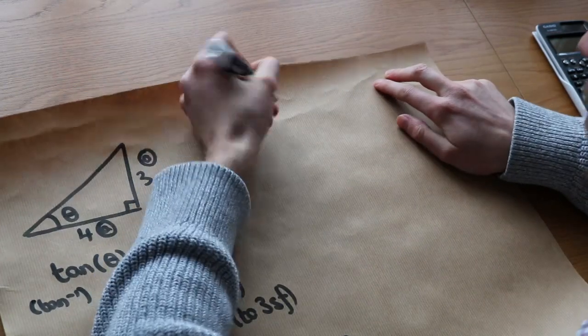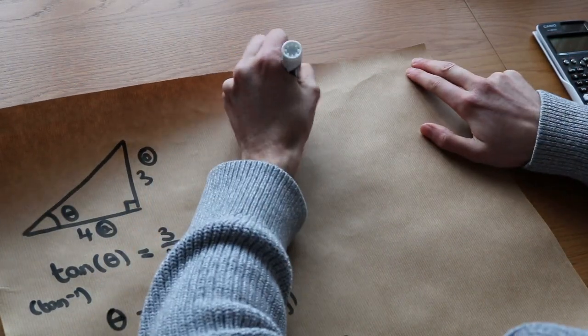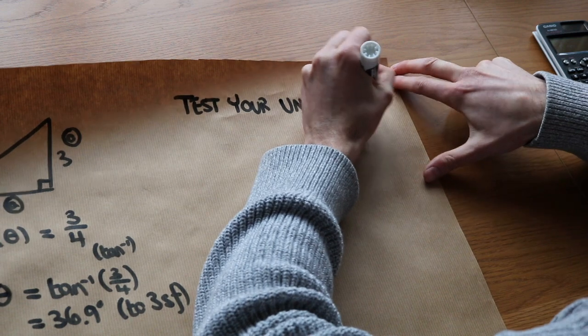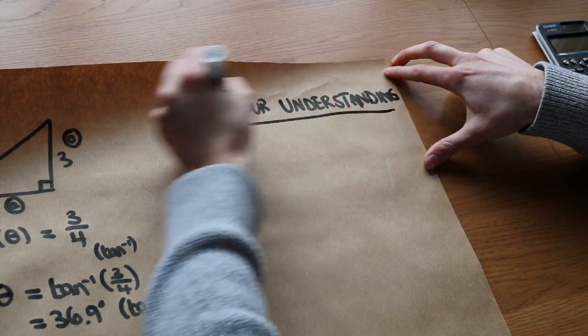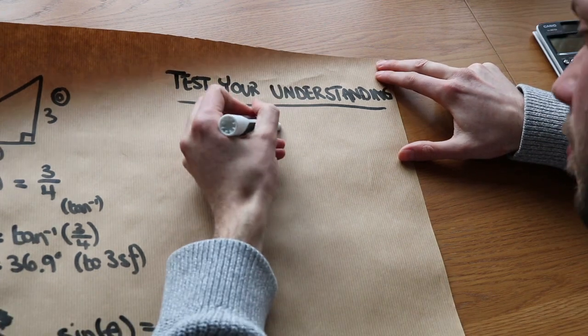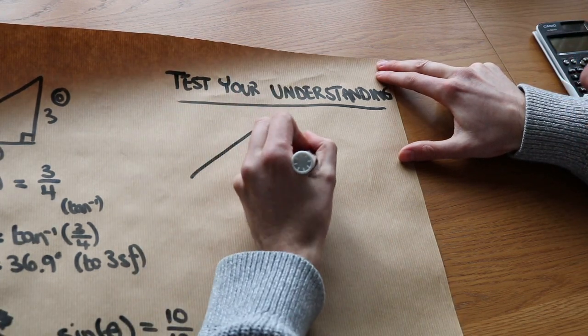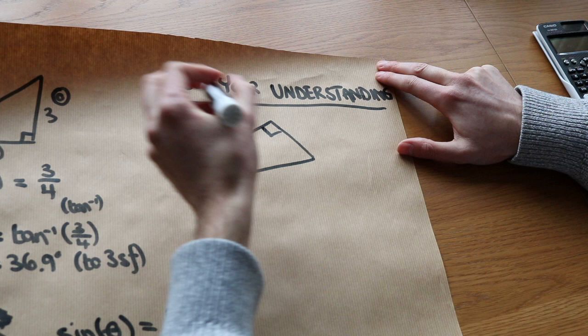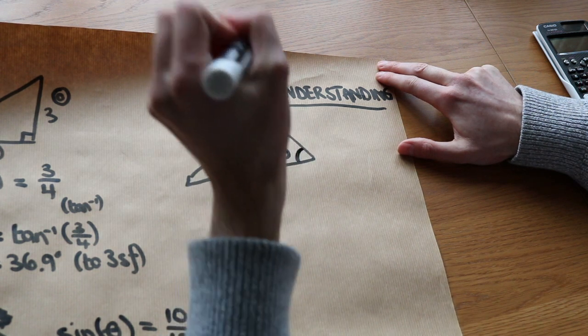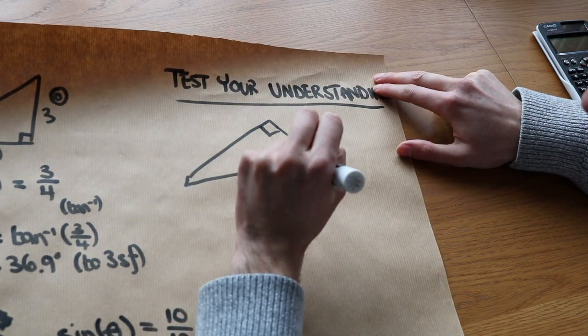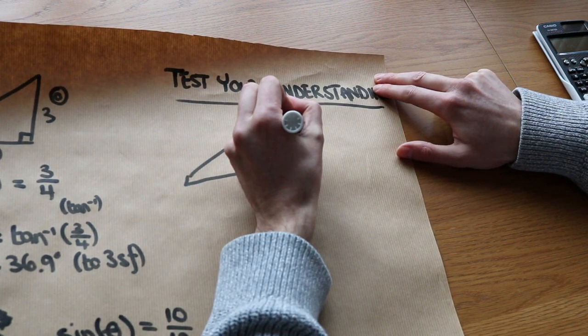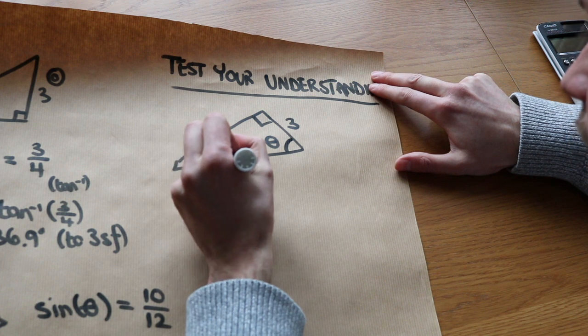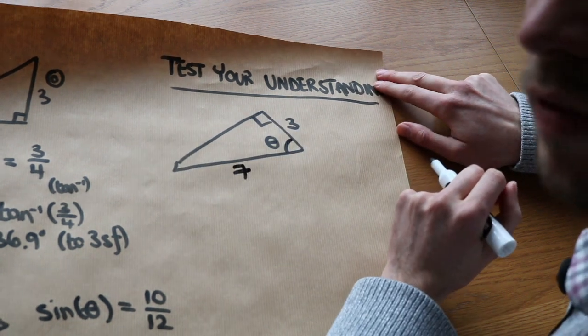Now, let's do a test your understanding question. So you can pause the video when I've written this. Test your understanding. Once again, running out of paper here. I'm going to give you this triangle. I want you to find this angle here. I'm going to give you this side, which I'm going to say is three, and I'm going to give you this side, which is seven. You might want to pause the video and have a quick go at that.